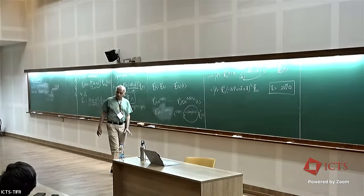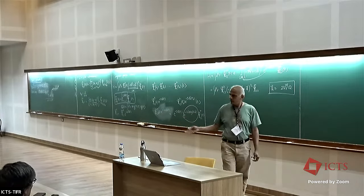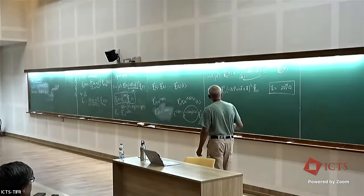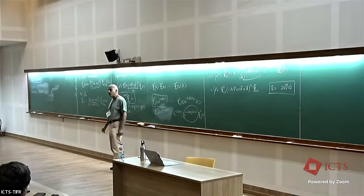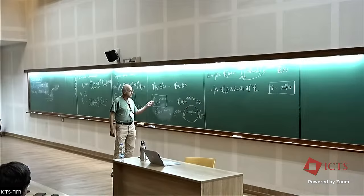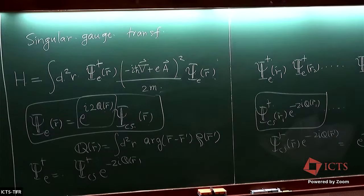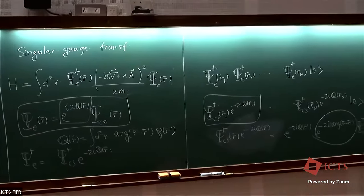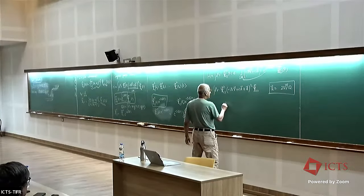That composite boson picture was beautiful, but the present picture — turning fermions into fermions — was developed by Lopez and Fradkin starting in 1991. Attaching two flux quanta keeps fermions as fermions. I leave it as an exercise to show that the anti-commutator of ψ_CS with ψ†_CS gives a delta function. You can also verify that attaching one flux quantum would convert a fermion into a boson — that's how statistical transmutation works.